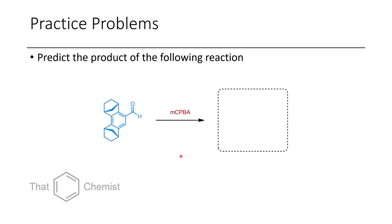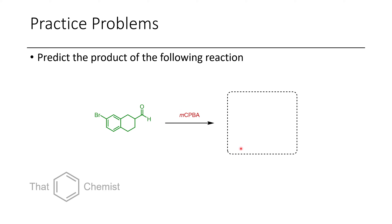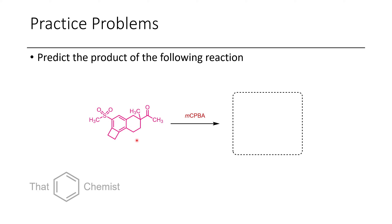Some good practice: show the product of the following reactions. First, take this benzaldehyde and treat it with MCPBA — what is the structure of the product? In the next case, we have an aliphatic aldehyde; see if you can propose what would happen. In the final case, we have this ketone — draw the product of this reaction.